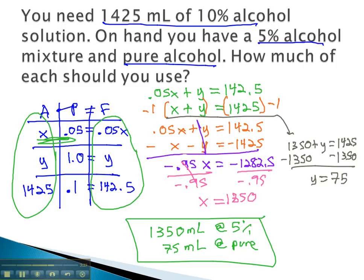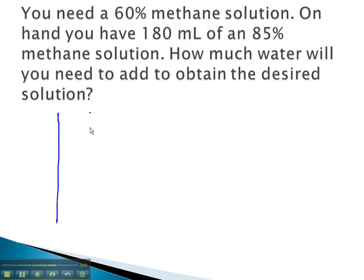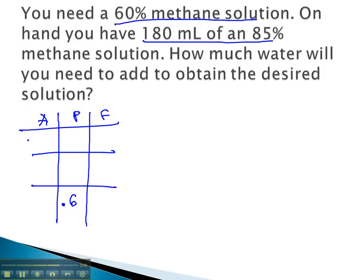Let's take a look at another example, where we have to set up this pure, either alcohol or water, situation. In this problem, we need 60% methane. That's what we need at the end, 0.6. We have, on hand, 180 milliliters, the amount, of 85%, 0.85. We want to know how much water. We don't know the amount, but the percent in water is always 0, will give us the desired solution.